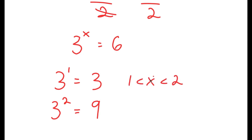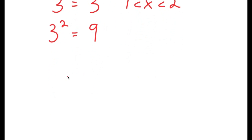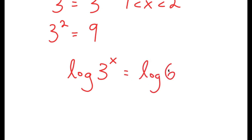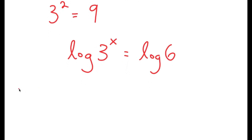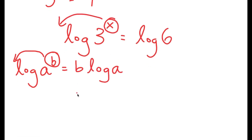We want to find the exact value of x. I'm going to start by taking the log on both sides, so I get log of 3 to the power of x is equal to log 6. If I have something in the form log a to the power of b, I can move the exponent b to the front, giving b times log a. So log of 3 to the power of x becomes x times log 3 is equal to log 6.